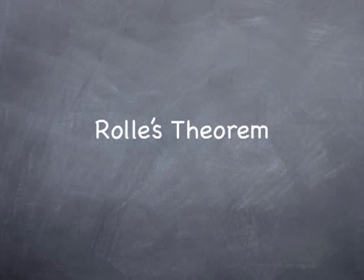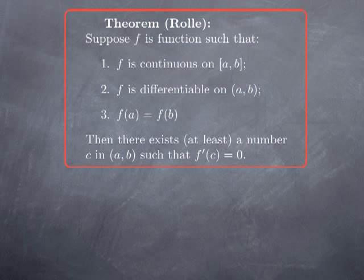Now we're going to start the module on the Mean Value Theorem, beginning with Rolle's Theorem, which is a particular case of the Mean Value Theorem. Assume you have a function that satisfies three conditions: it is continuous on the closed interval [a,b], it is differentiable at each point in the interior of the interval, and it takes the same value at the endpoints. Under these three conditions, the theorem states that there exists at least one number c in the open interval (a,b) where the derivative takes the value zero.